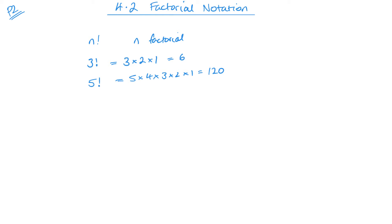This is also a button on your calculator. To find the factorial button, you're looking for X with an exclamation mark. On my calculator, the Casio ClassWiz 991, it is above the X to the minus 1 button, so you need to press shift and that button — it's just below the X squared button. On the slightly older Casio calculators, it's still above the same X to the minus 1 button, so shift there as well.